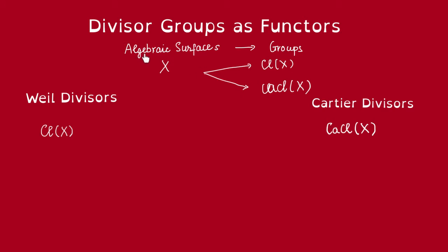This gives us two maps from the set of algebraic surfaces to the set of groups. There's nothing special about dimension 2; this also works for higher dimensions. But we'll stick to the discussion of surfaces for now.